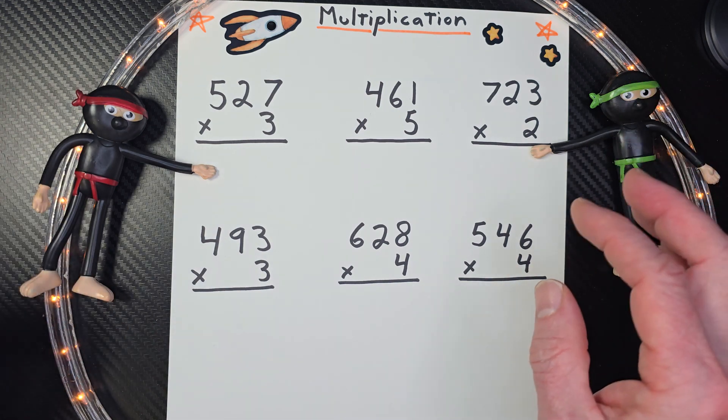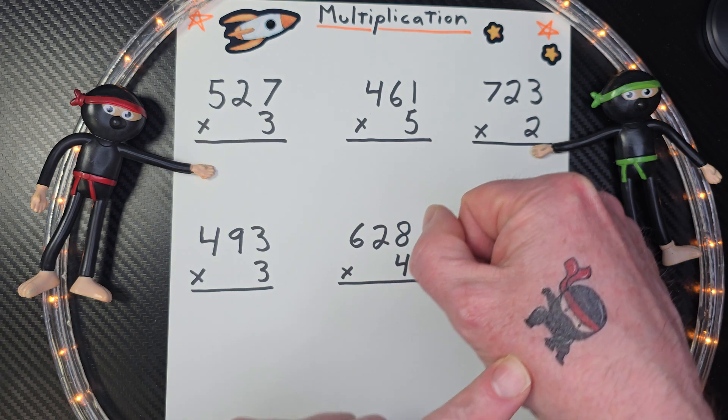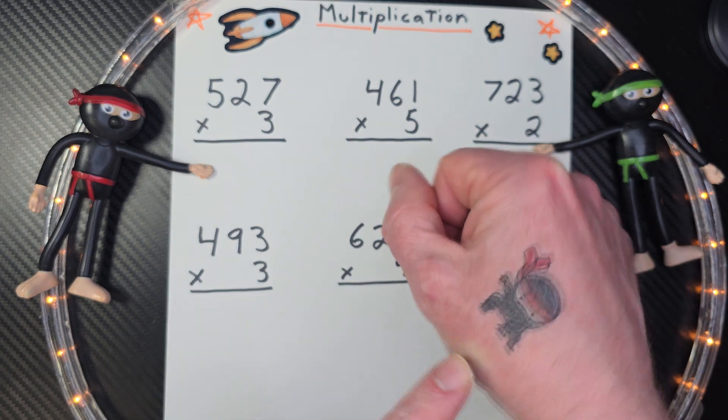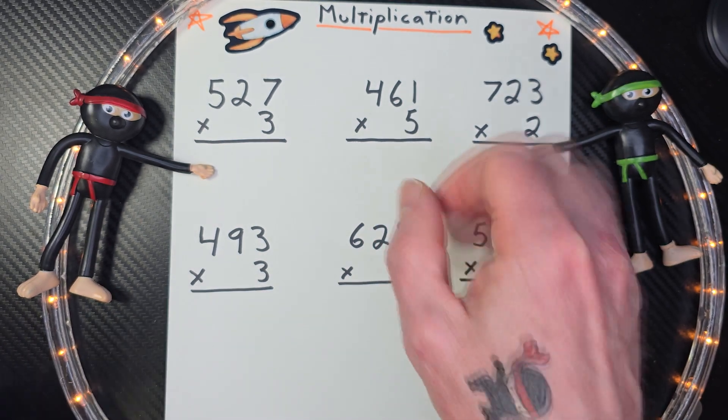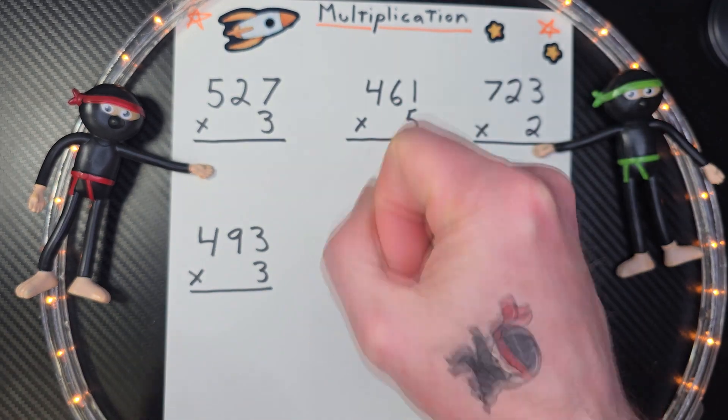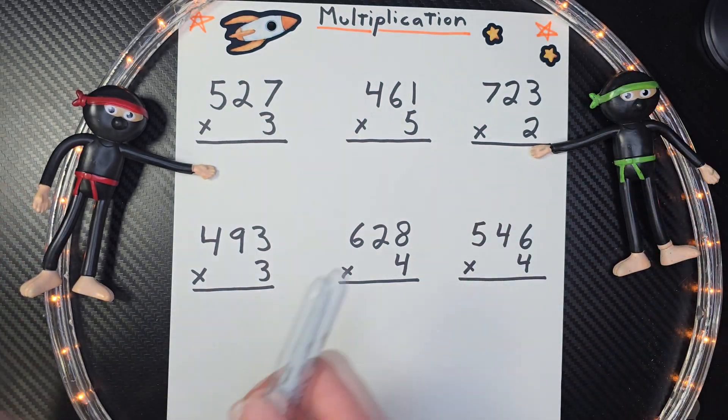All right, let's go ahead and begin. First of all, check this out. I have a temporary ninja tattoo. This is so cool. I'll have a link down below where you can find these cool tattoos on Amazon. So it's kind of neat to just pretend like you're a ninja. And we are math ninjas, aren't we? All right, let's get started here.